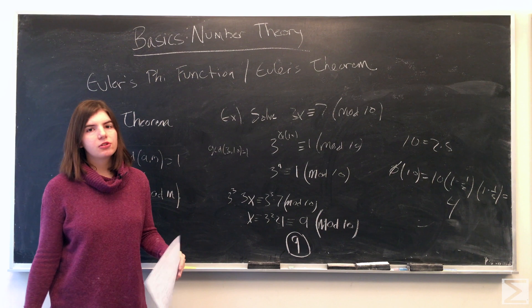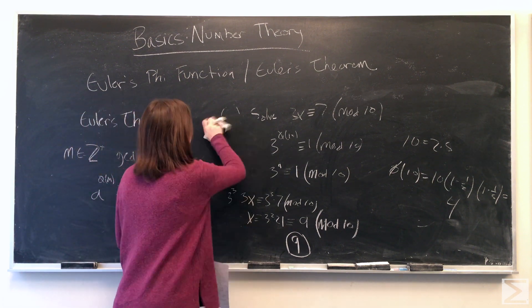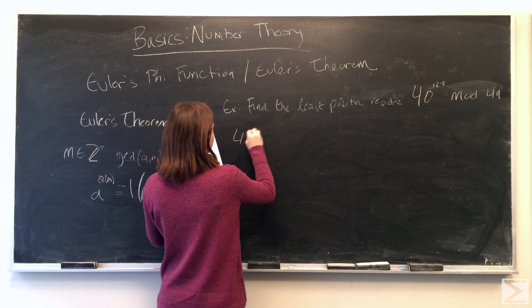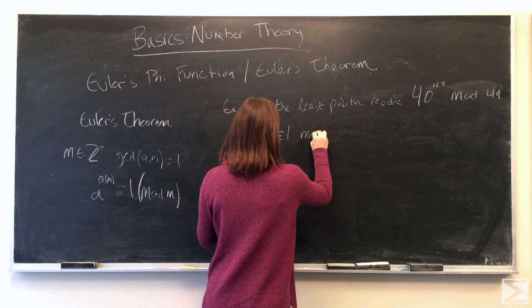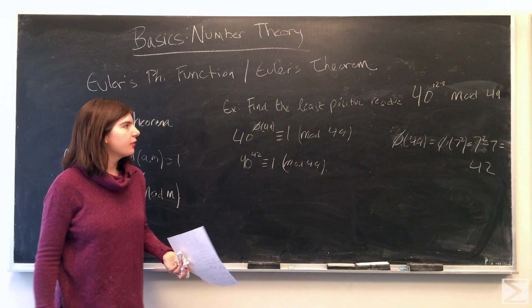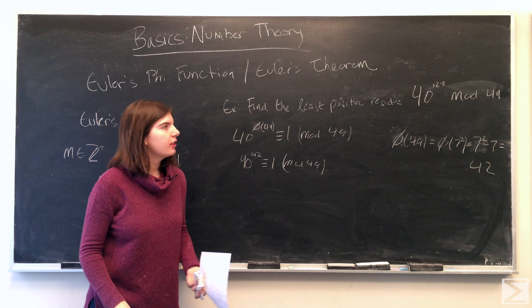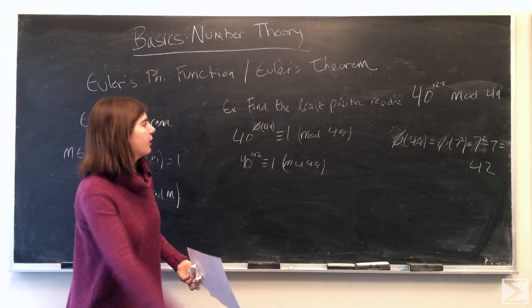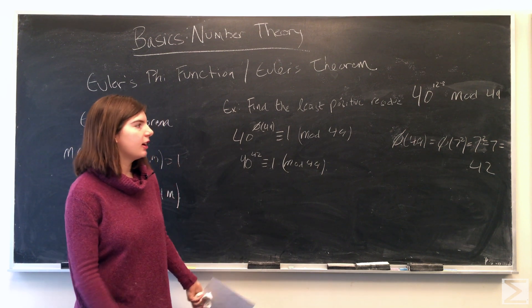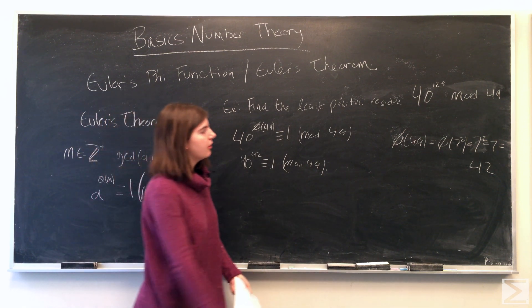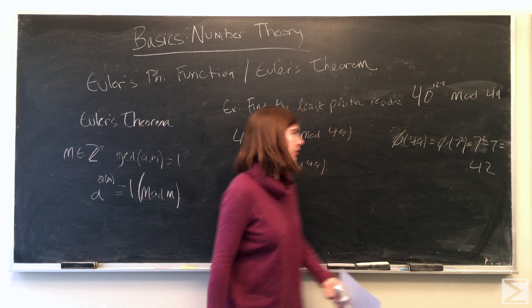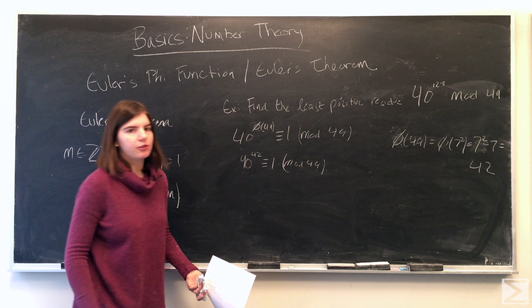You can also use Euler's theorem to find the least positive residue. All right, so if we were asked to find the least positive residue of 40 to the 128th power modulo 49, Euler's theorem tells us that 40 to the phi of 49 is congruent to 1 modulo 49. We have to calculate the phi of 49. We can use one of the methods we discussed earlier. The phi of 49 is the phi of 7 squared, so we can say 7 squared minus 7, and we get 42. So now we know that 40 to the 42 is congruent to 1 modulo 49.